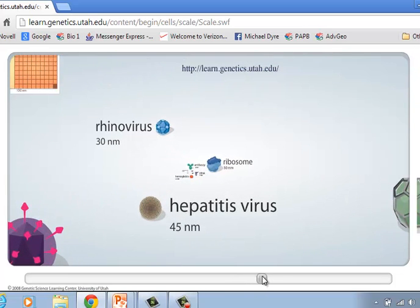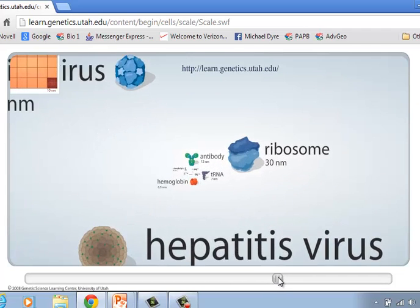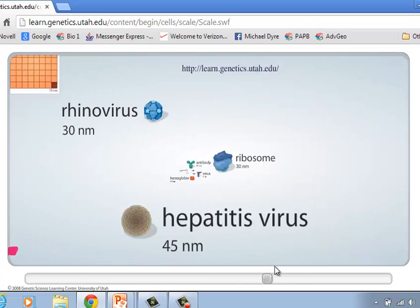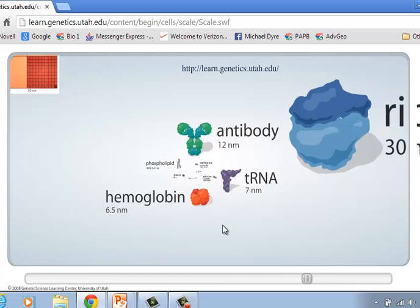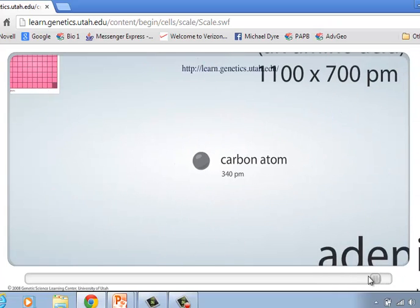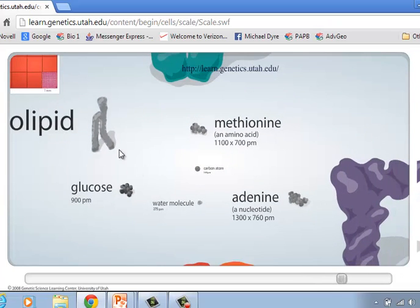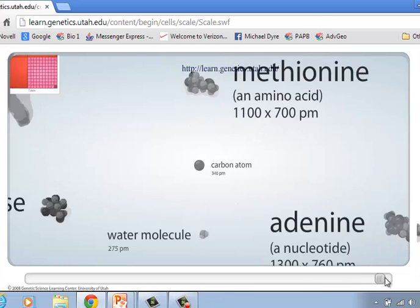We can see a rhinovirus for a cold, a ribosome which makes protein with a large part and small member. There's an antibody. Hemoglobin protein making your blood red for that blood cell that was way back when. There's a transfer RNA which is going to bring in amino acids to the ribosome to make proteins. You can see a phospholipid. Phospholipids come together to make cell membranes. There's glucose C6H12O6, methionine and leucine which are two amino acids for proteins. There's a water molecule, and then finally a carbon atom.